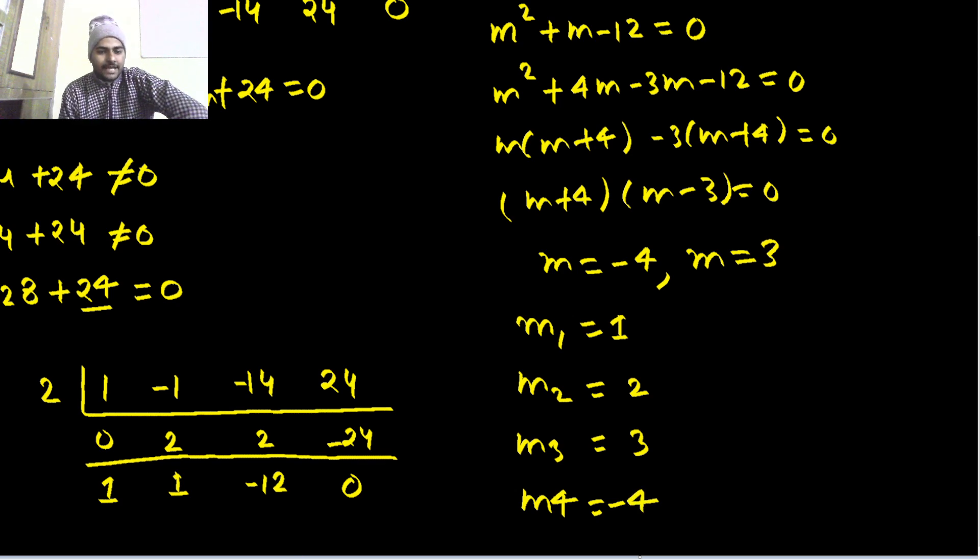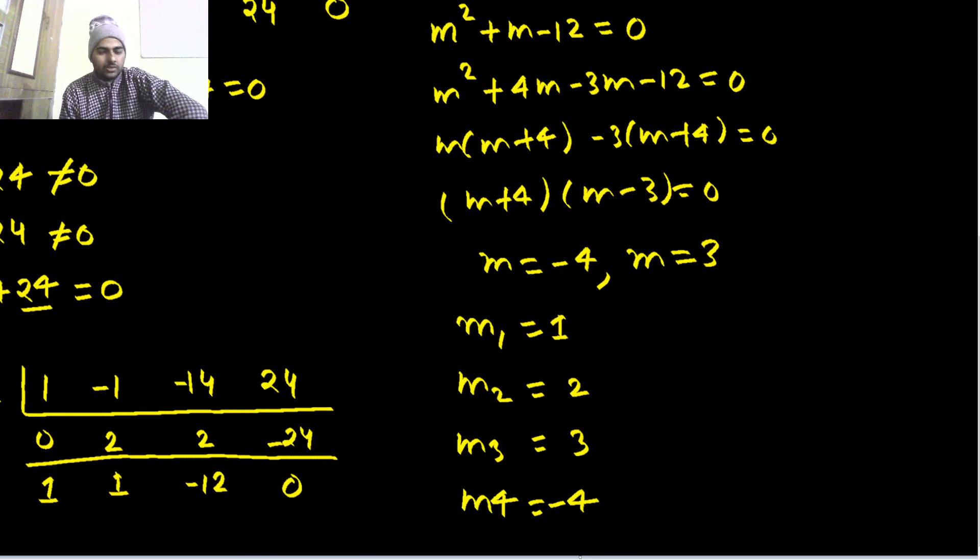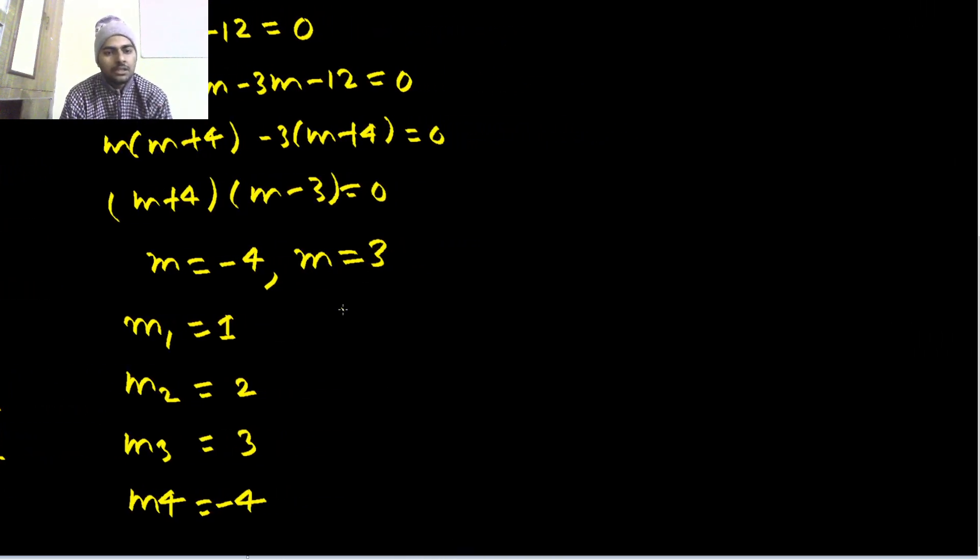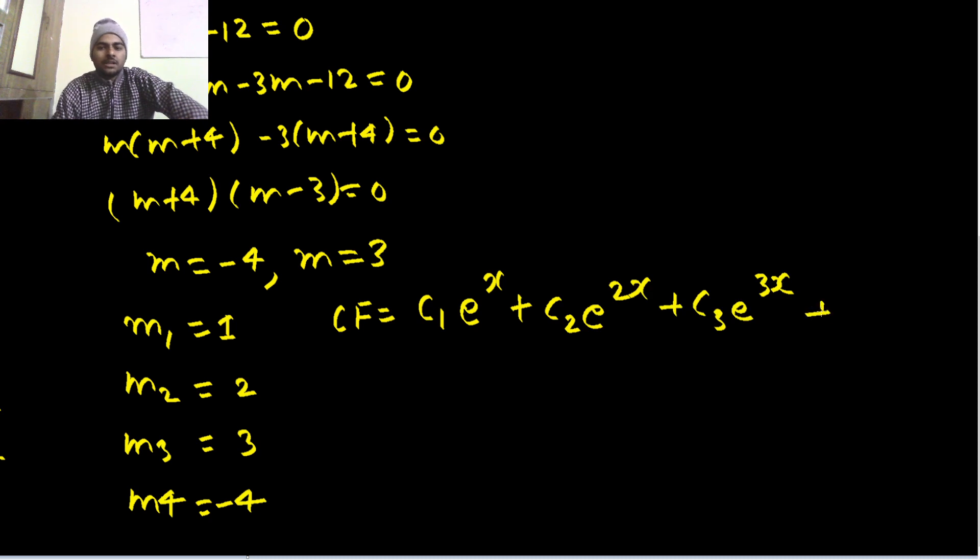All the roots are distinct. We know how to find the complementary function when roots are distinct: CF = C1·e^x + C2·e^(2x) + C3·e^(3x) + C4·e^(-4x).